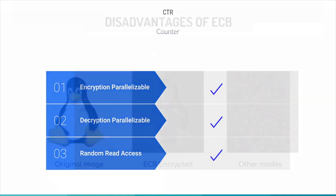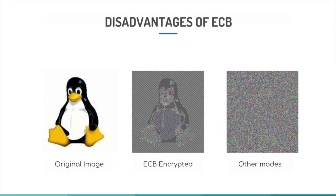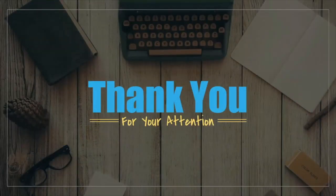Both encryption and decryption in CTR mode are parallelizable, and it also allows random read access. One foremost disadvantage of ECB is its lack of diffusion: because ECB encrypts identical plaintext into identical ciphertext blocks, it does not hide data patterns. In some senses it doesn't provide serious message confidentiality and is not recommended for use in cryptographic protocols at all. The image on the right shows how an image might appear encrypted with CBC, CTR, or any other secure mode — indistinguishable from random noise.